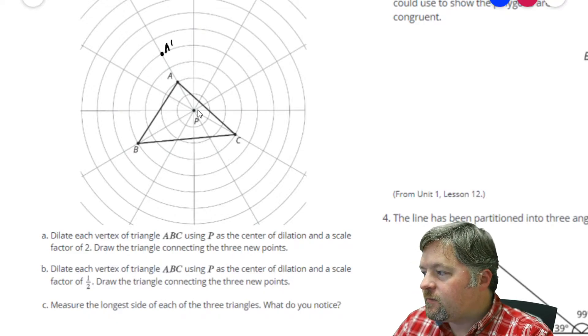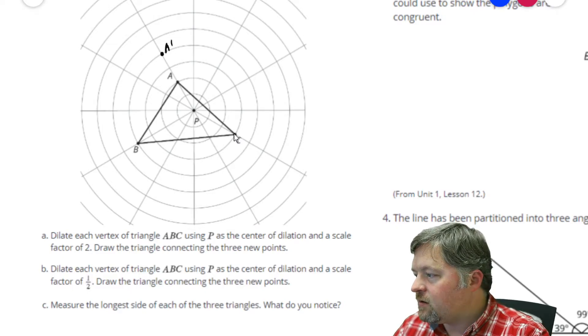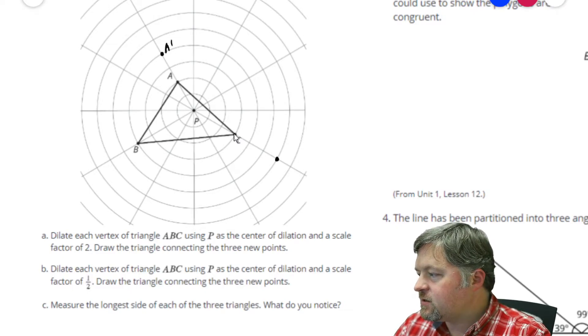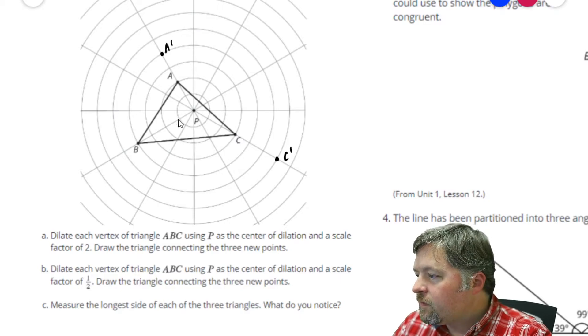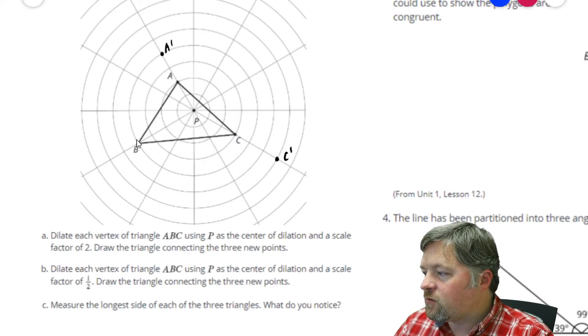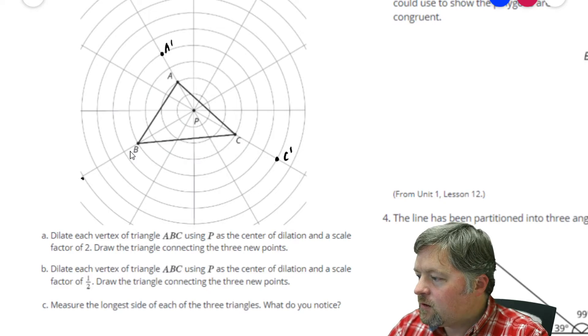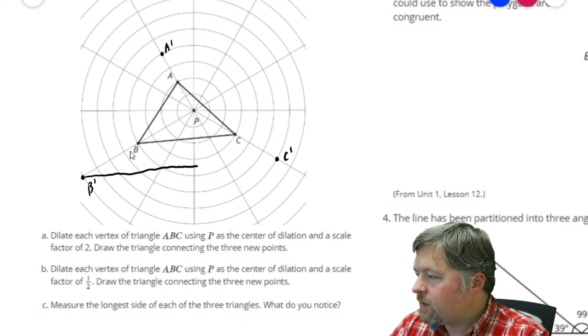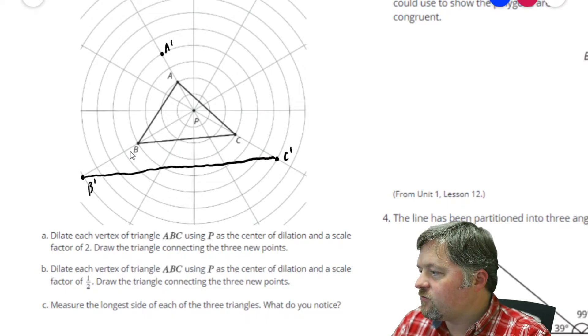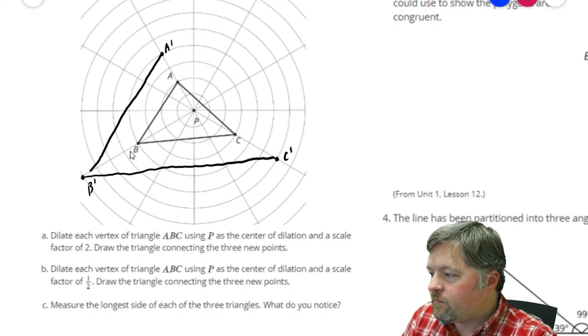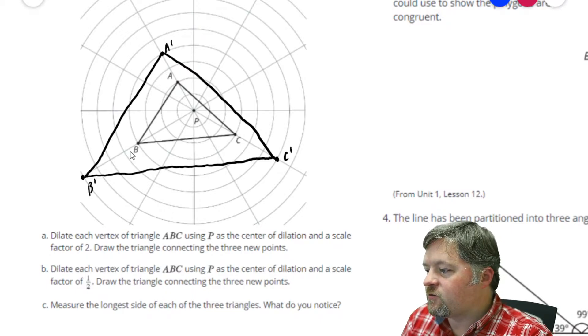Point C is 1, 2, 3 units away. 3 times 2 is 6. B is 1, 2, 3, 4 units away. 4 times 2 is 8. That would be there. See just how well I can draw this. Our new triangle with a scale factor of 2.